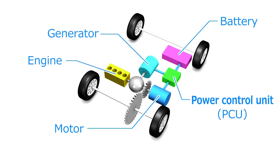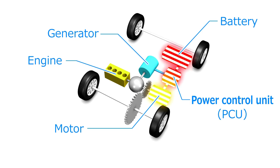Power control units supply electrical power from the battery to the motor to control vehicle speed, and also send electricity generated during deceleration to the battery for storage.